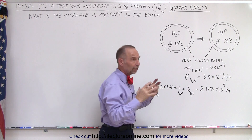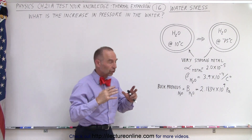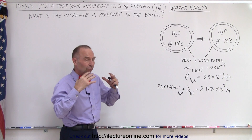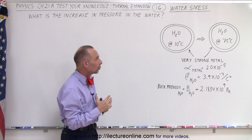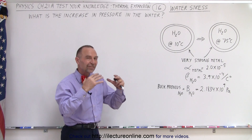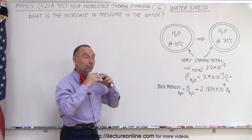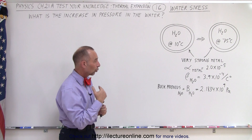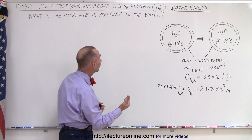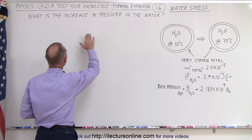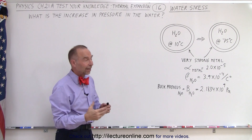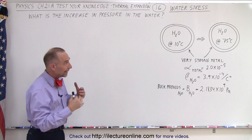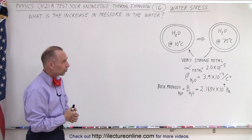Now, assuming that the metal is very strong, the only change in the metal is that it expands due to the heat increase, but it is able to withstand the enormous pressure from the increased pressure inside the water. The question then is: what will be the increase in pressure inside the water with the 65 degrees centigrade increase in temperature?